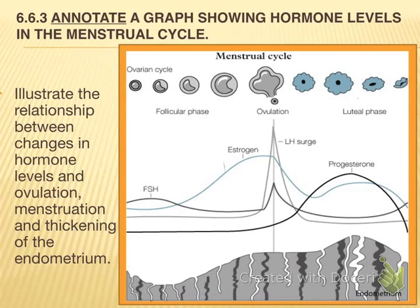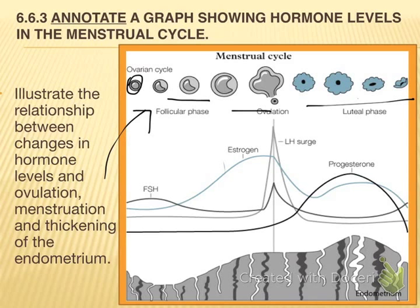Our last assessment statement is 6.6.3, which asks us to annotate a graph showing hormone levels in the menstrual cycle. Take the graph provided and add annotations describing every high and low for each of the four hormones. The diagram also includes drawings of a developing egg — oogonia, primary follicle, secondary follicle, corpus luteum — and shows the buildup and breakdown of the endometrium, in a case where fertilization has not occurred.